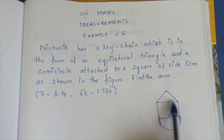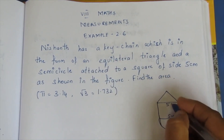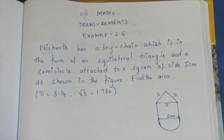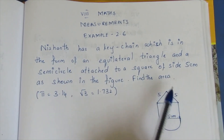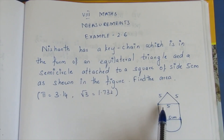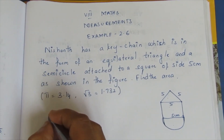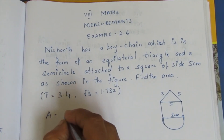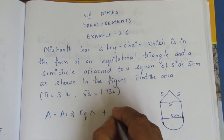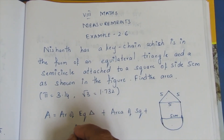What is an equilateral triangle? An equilateral triangle has all sides equal. Here the side is 5 cm on all sides. The keychain is in the form of an equilateral triangle. We will find the area. Area is equal to area of equilateral triangle plus area of square plus area of semicircle.